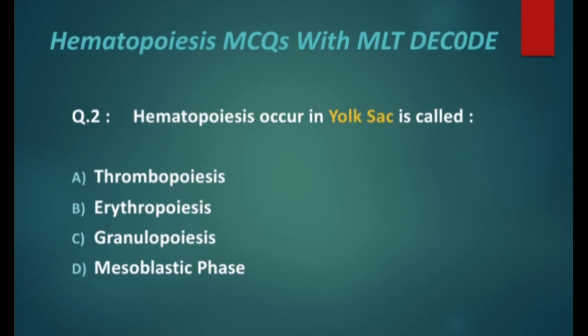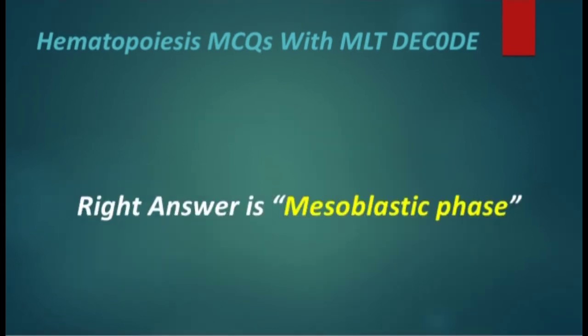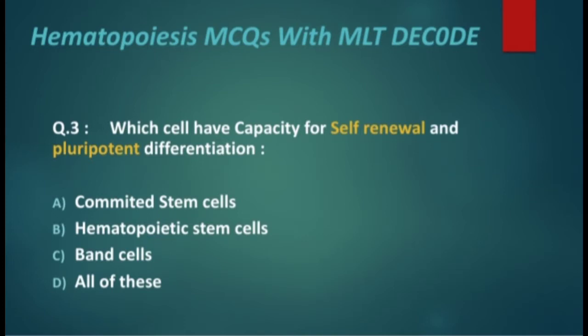Next MCQ: hematopoiesis occurring in the yolk sac is called thrombopoiesis, erythropoiesis, granulopoiesis, or mesoblastic phase? The right answer is mesoblastic phase.